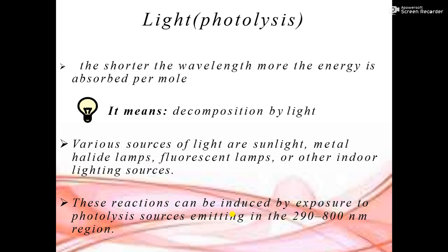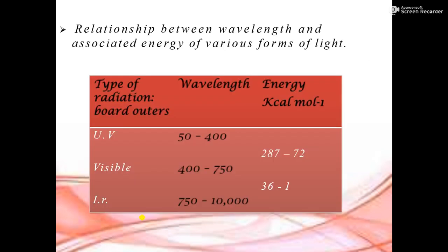Various sources of light include sunlight, metal halide lamps, fluorescent lamps, and other indoor lighting sources. These reactions can be induced by exposure to photolysis — 'photo' means light and 'lysis' means splitting. Photolysis sources emit in the 290 to 800 nanometre region. There is a relationship between wavelength and the associated energy of various forms of radiation.